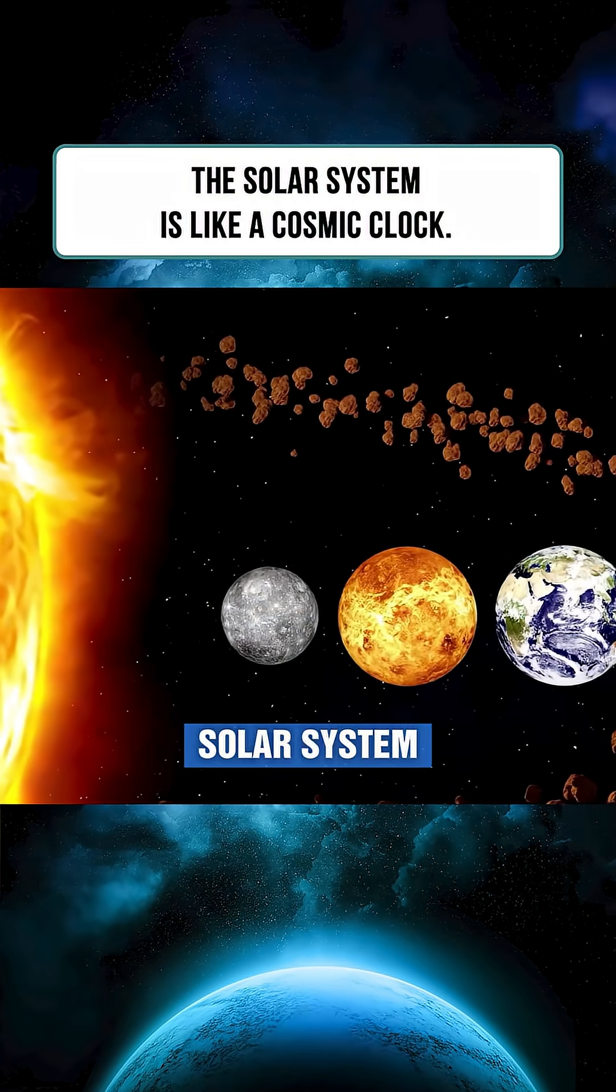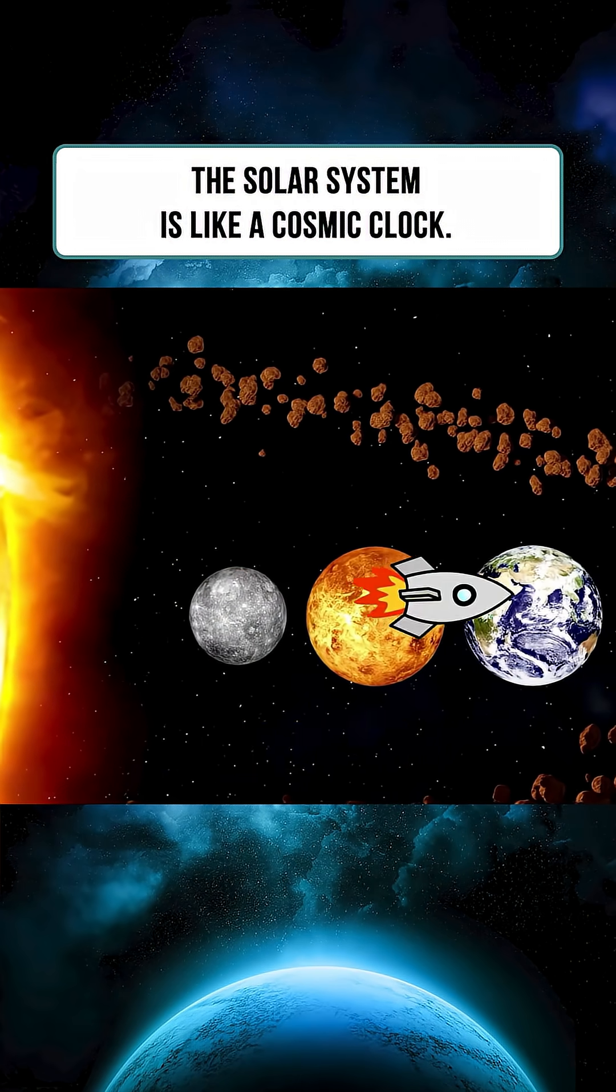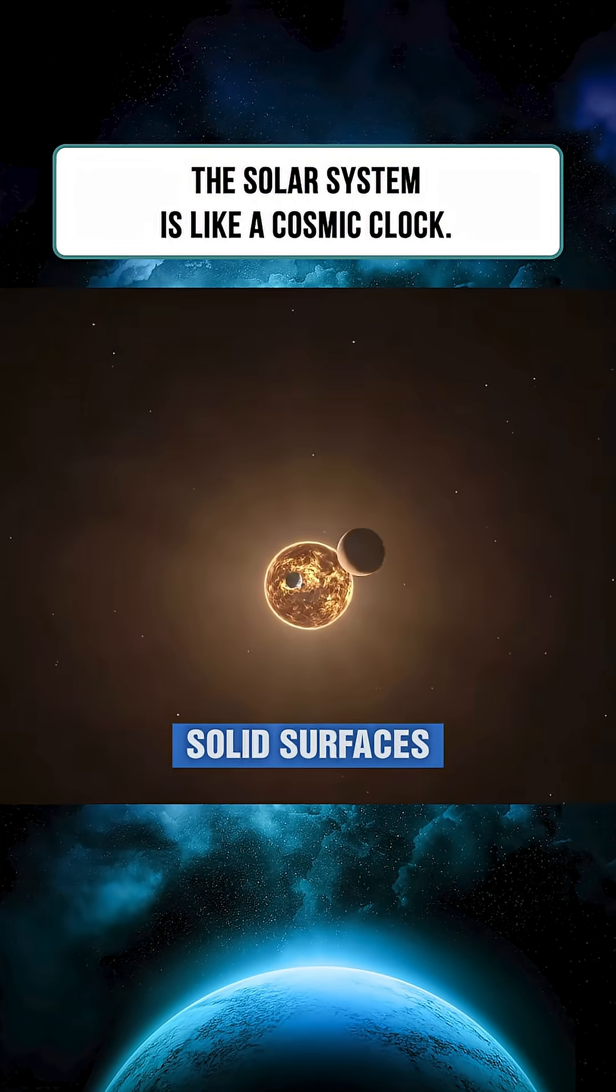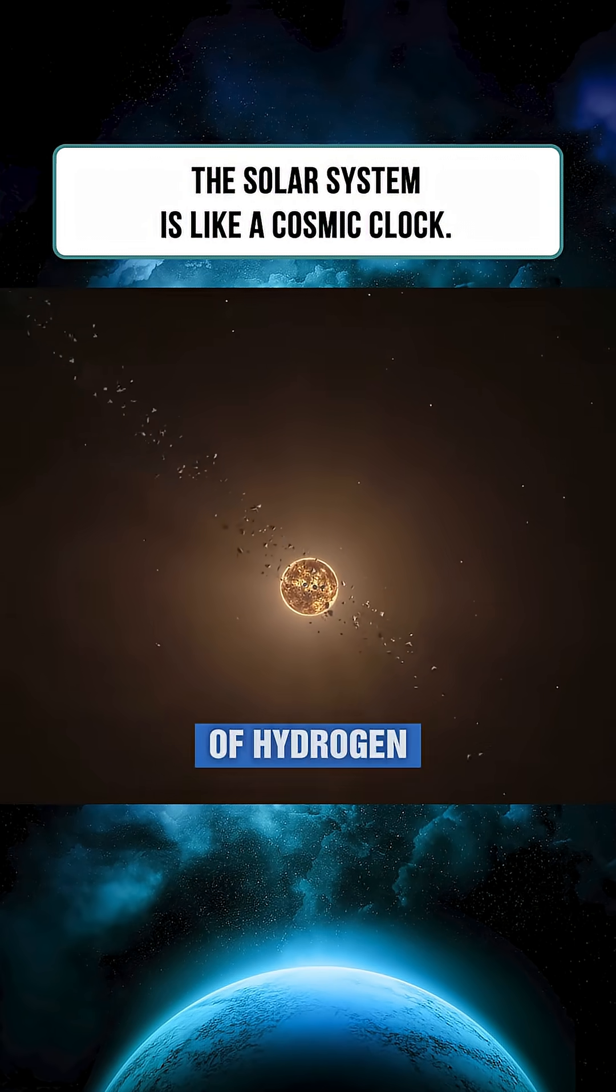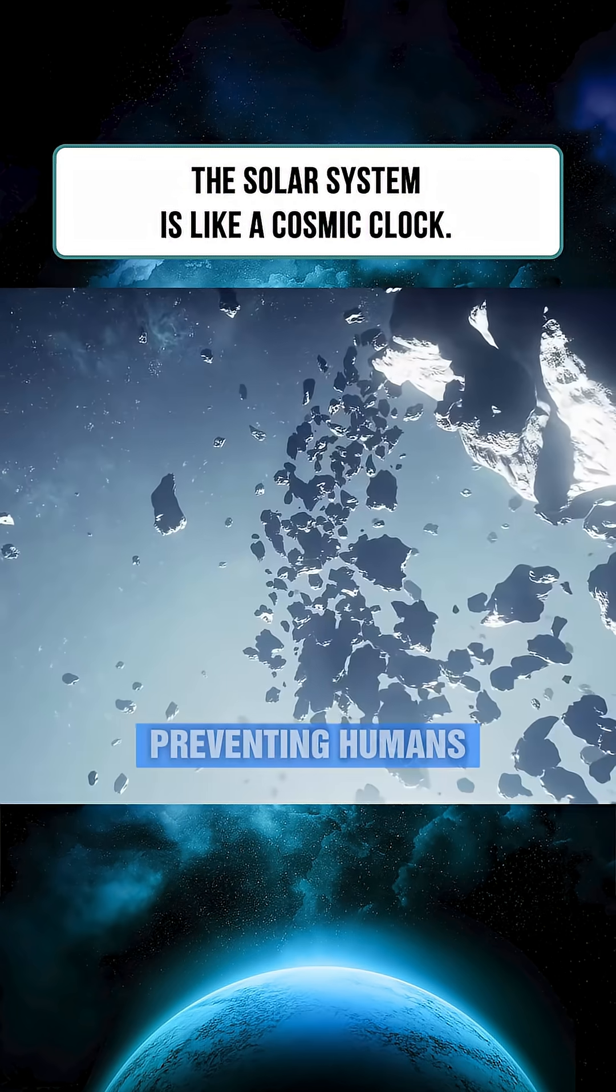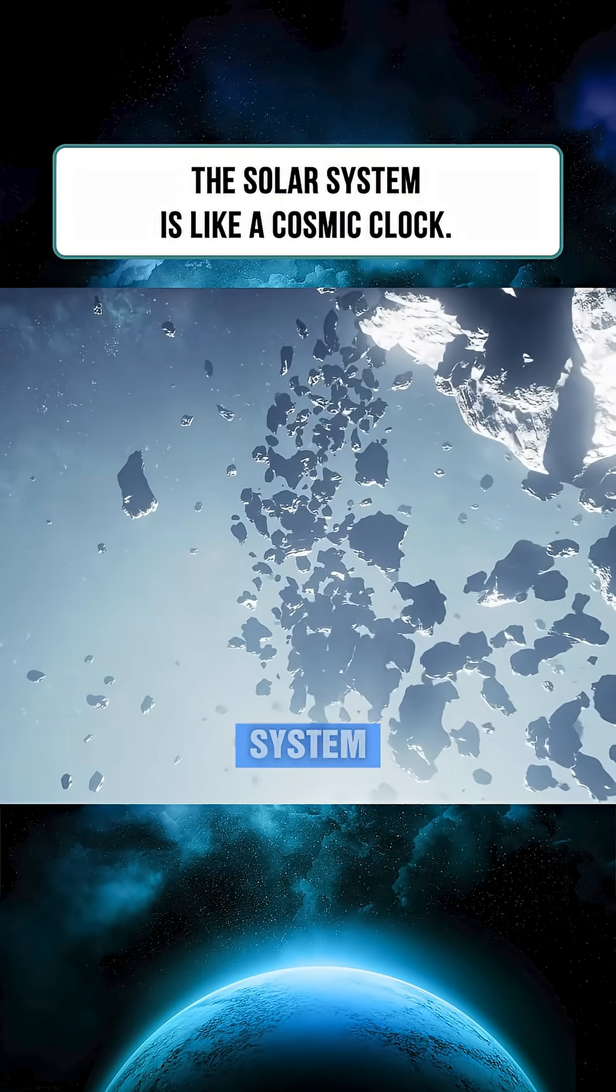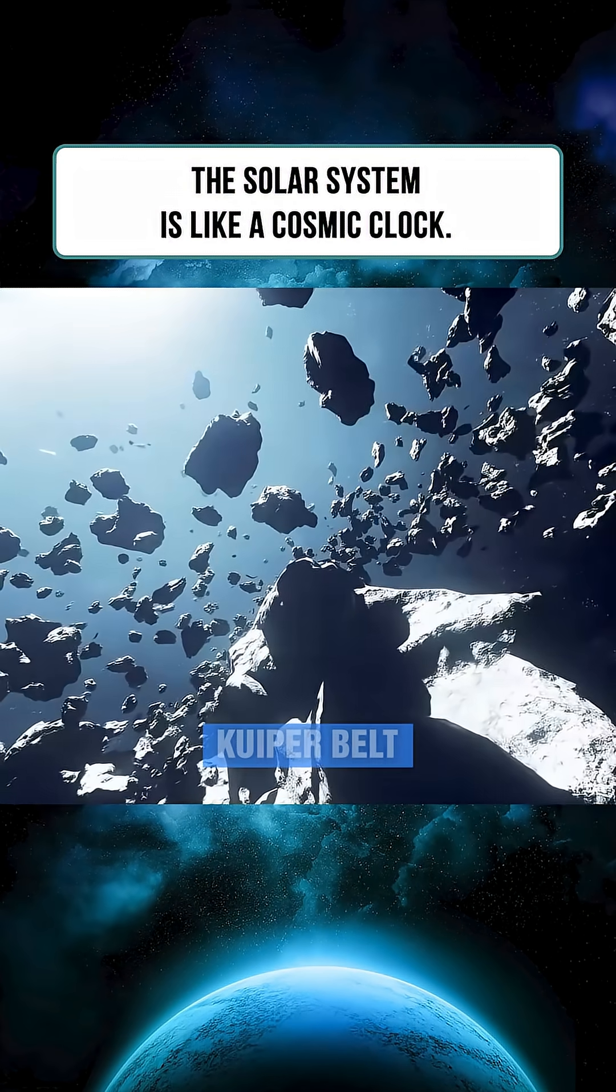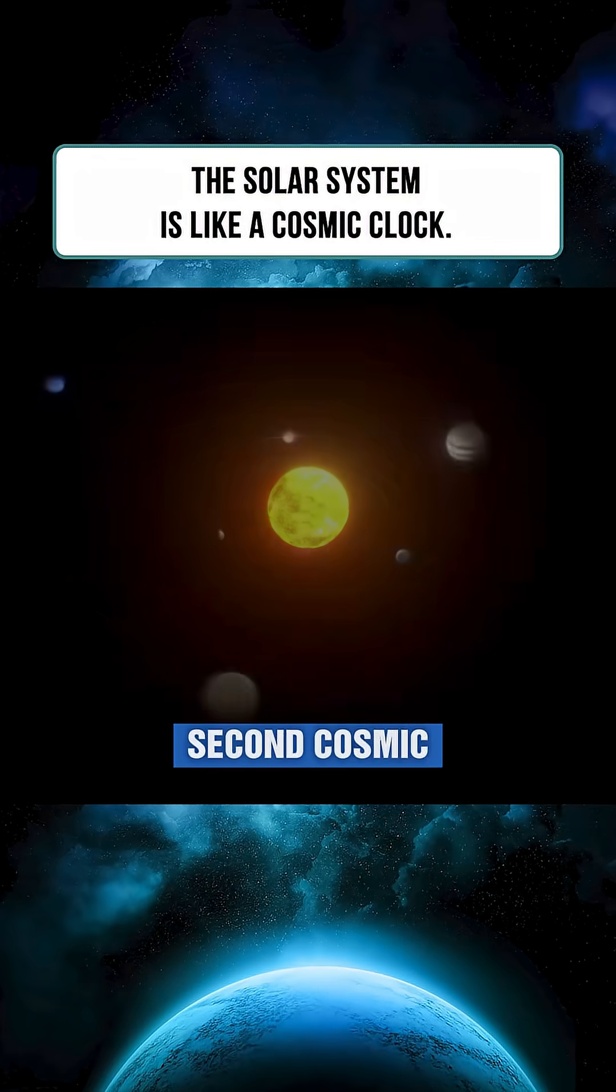Beyond the asteroid belt lies a different realm. The outer solar system contains four gas giants. These planets have no solid surfaces and are composed mostly of hydrogen and helium. If the asteroid belt acts like the first barrier preventing humans from escaping the solar system, then the gas giants and the Kuiper belt beyond them form a second cosmic prison.